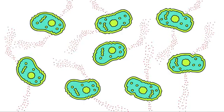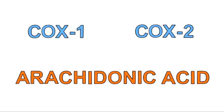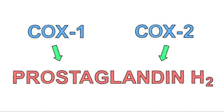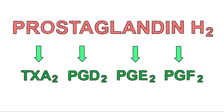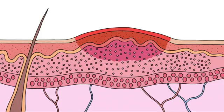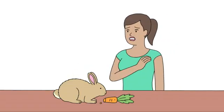When cells are damaged, they release a chemical called arachidonic acid. Now two enzymes, called COX-1 and COX-2, convert this arachidonic acid into prostaglandin H2, which is then converted into a bunch of other chemicals that do a bunch of things, including raise your body temperature, cause inflammation, and lower the pain threshold.